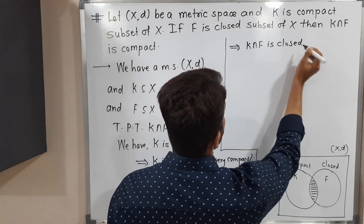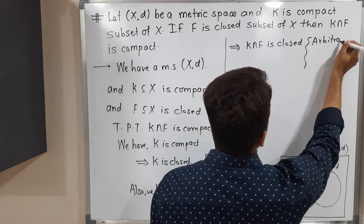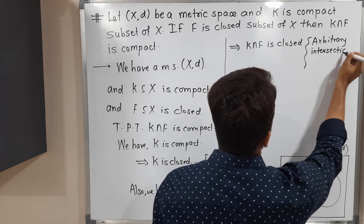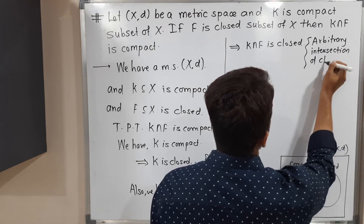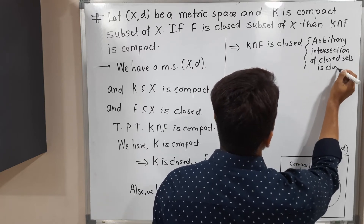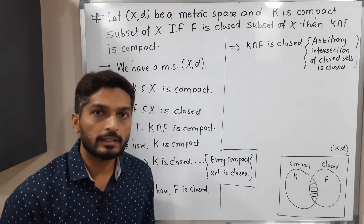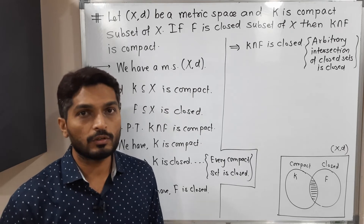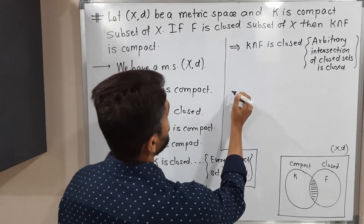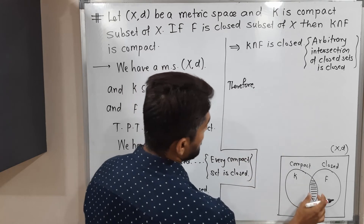The reason is that an arbitrary intersection of closed sets is closed — that means whether it is a finite or infinite intersection, the intersection will be closed.